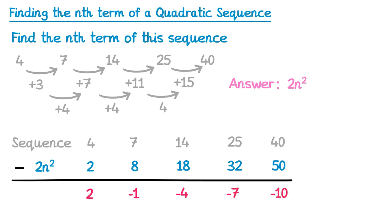We've now got the linear sequence in red, so we find the nth term of this. The difference between terms is take away 3, so it must be a minus 3n sequence, and since we start at 2, we need to add 5, since negative 3 add 5 is 2.